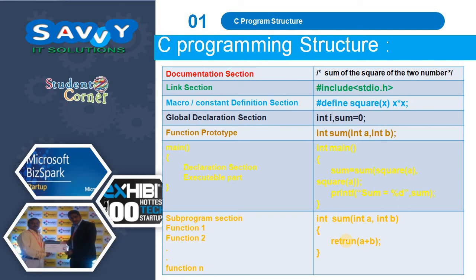In conclusion: on the left side we show the structure that a C program contains, and on the right side we show the respective statements. The documentation section uses comments. The link section uses hash include stdio.h, which is the standard input header file. We define a macro such as square of x equals x into x — whenever we write square(x) it replaces with x*x. The global variable declaration includes variables like i and sum initialized to 0. The function prototype is declared above main for functions used later. Inside main, we call sum-of-squares with arguments, take a variable a, and print the sum.